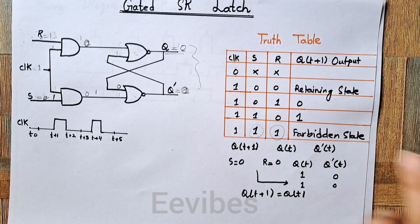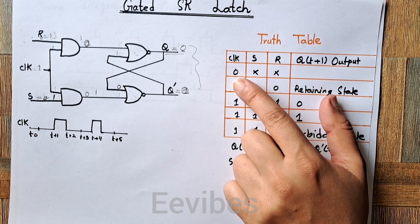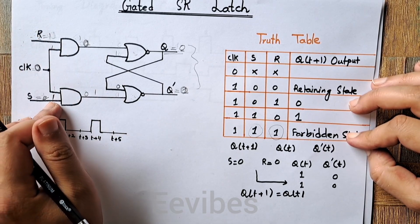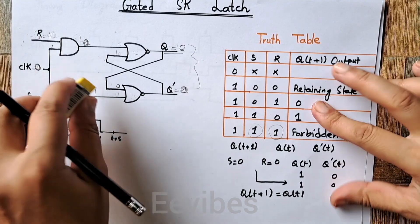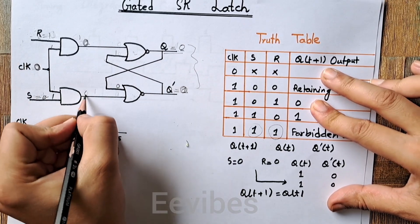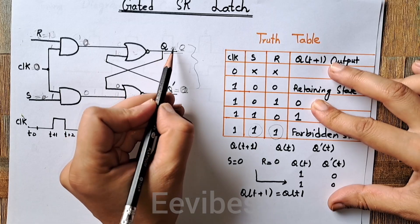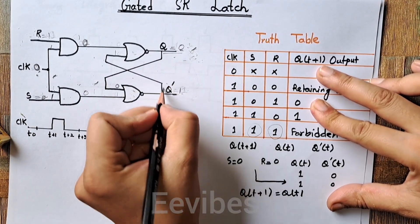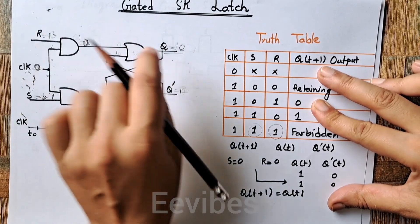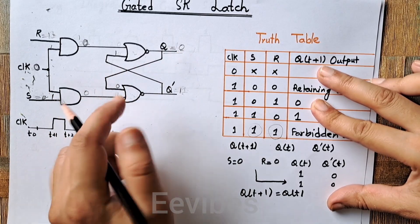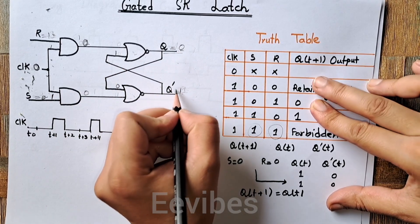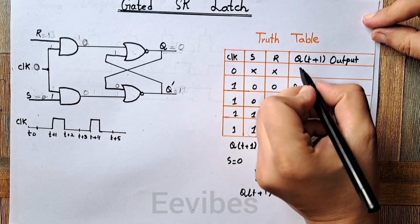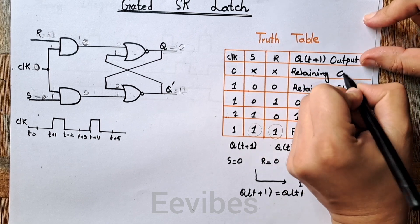The last combination is when clock is equal to zero. When the clock signal is zero, you don't care about the input combinations, because both AND gates will produce output equal to zero. If Q was previously equal to zero while Q-complement was equal to one, the feedback of one forces the NOR gate to produce zero, while zero AND zero forces Q-complement equal to one. So when clock is zero, the flip-flop remains in the retaining state, represented by Q(t).